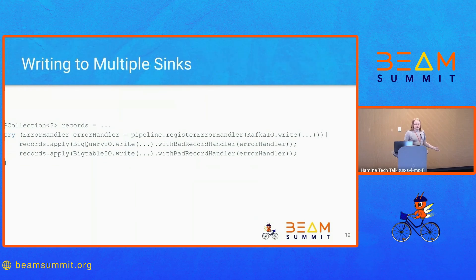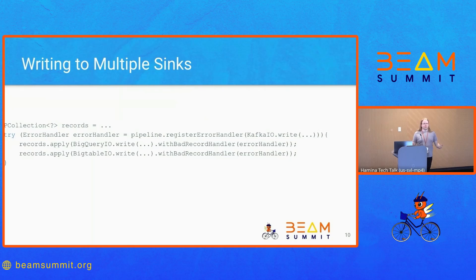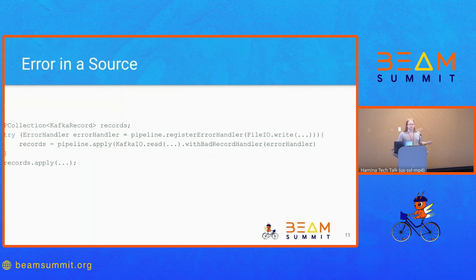It's pretty easy to make this go to multiple sinks. If you're doing multiple transforms but want them all going into one error queue, you can put them all to one place and have your operations team look at that one queue for all errors, even if they're coming from writing to multiple sources. It's also simple to do the same thing if the error is in a source — you just have to define the records outside the try block.